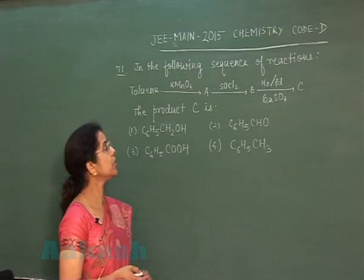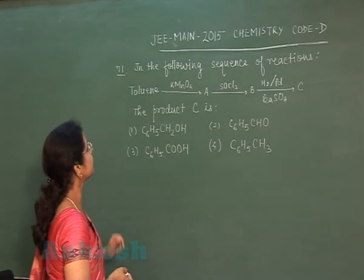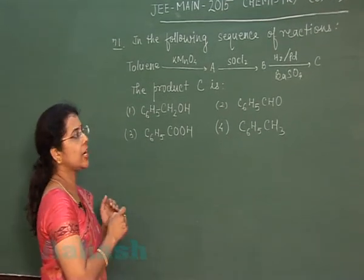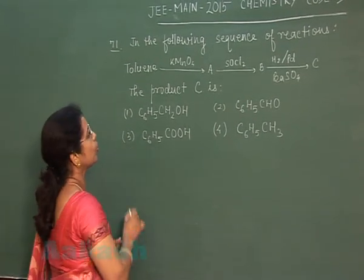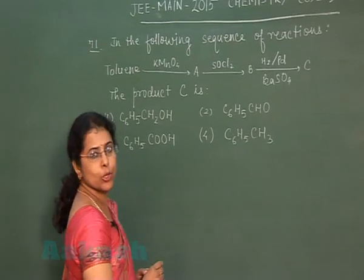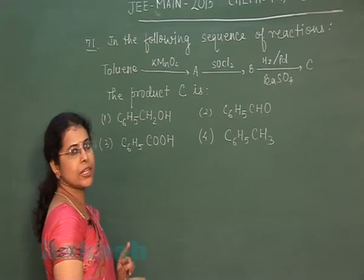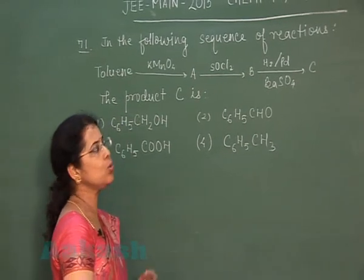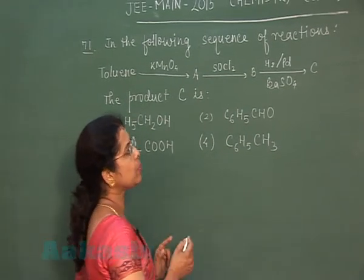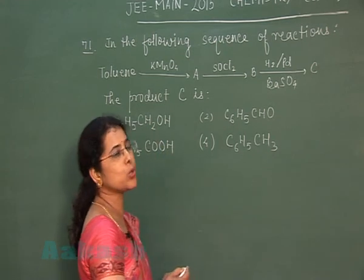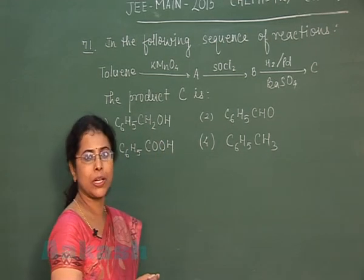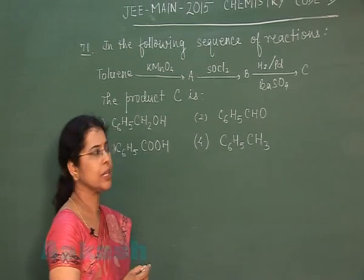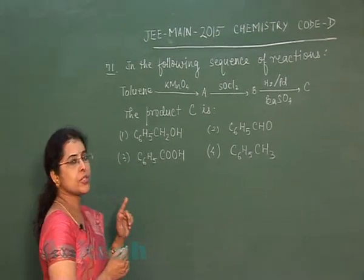Moving to question number 71. In the following sequence of reactions: toluene reacts with KMnO4 to give product A, which upon treatment with SOCl2 forms B. B when treated with hydrogen in the presence of palladium and barium sulfate gives product C. We have to identify product C.